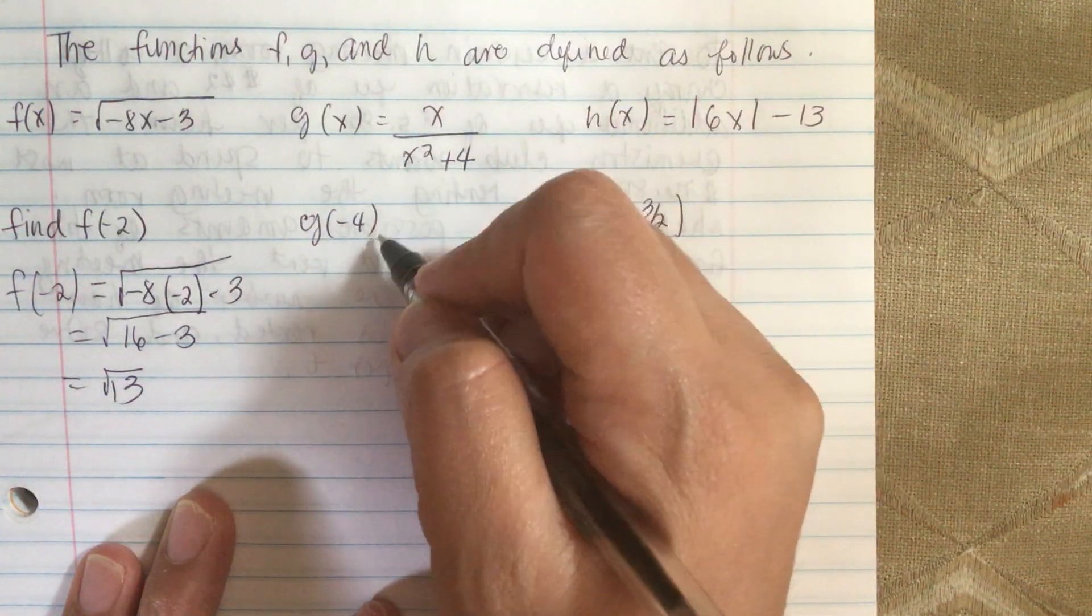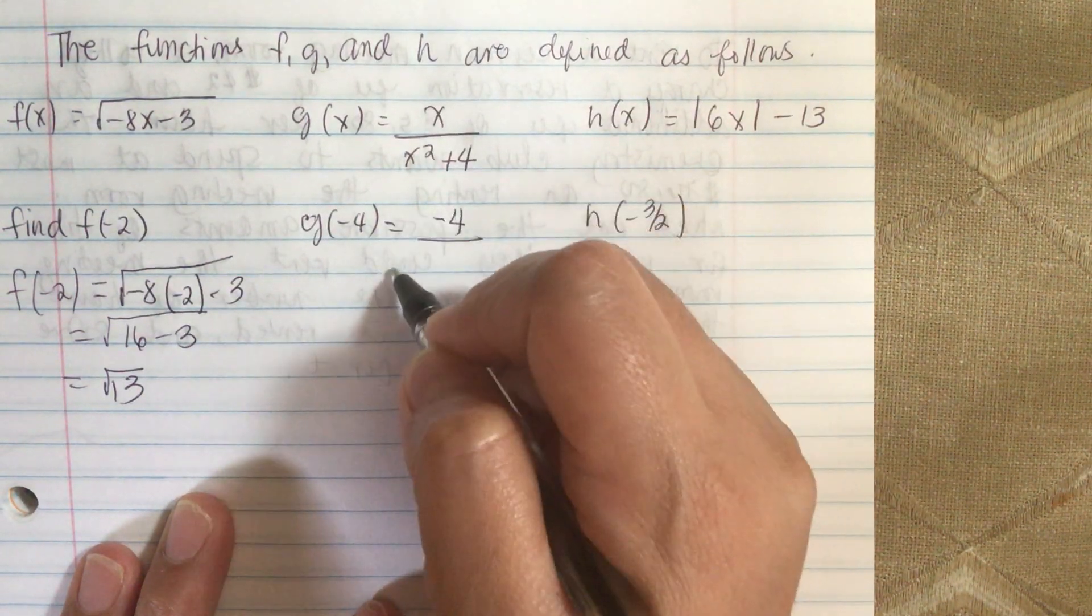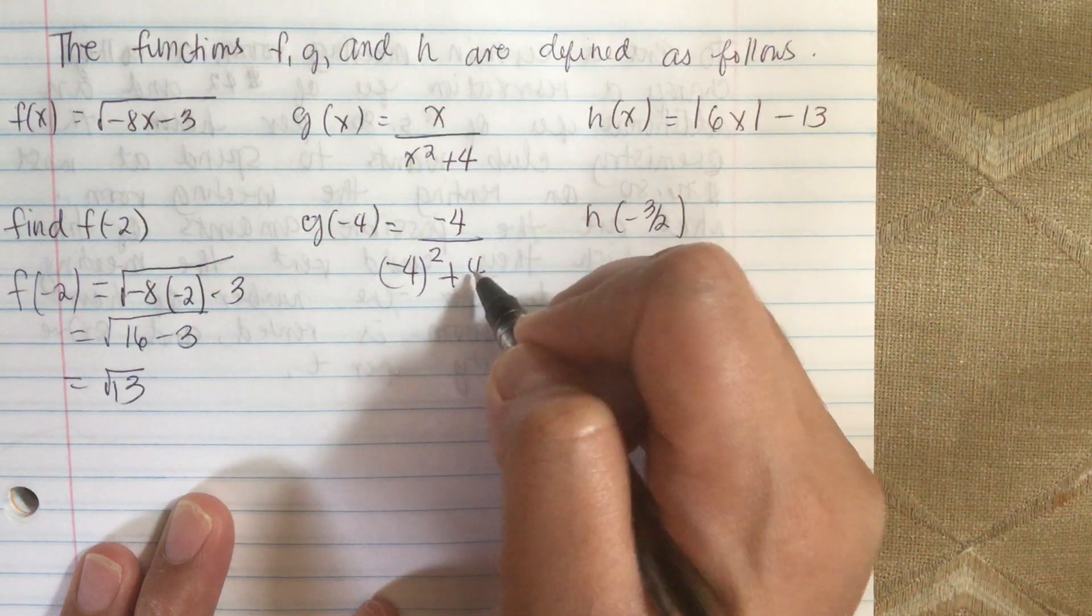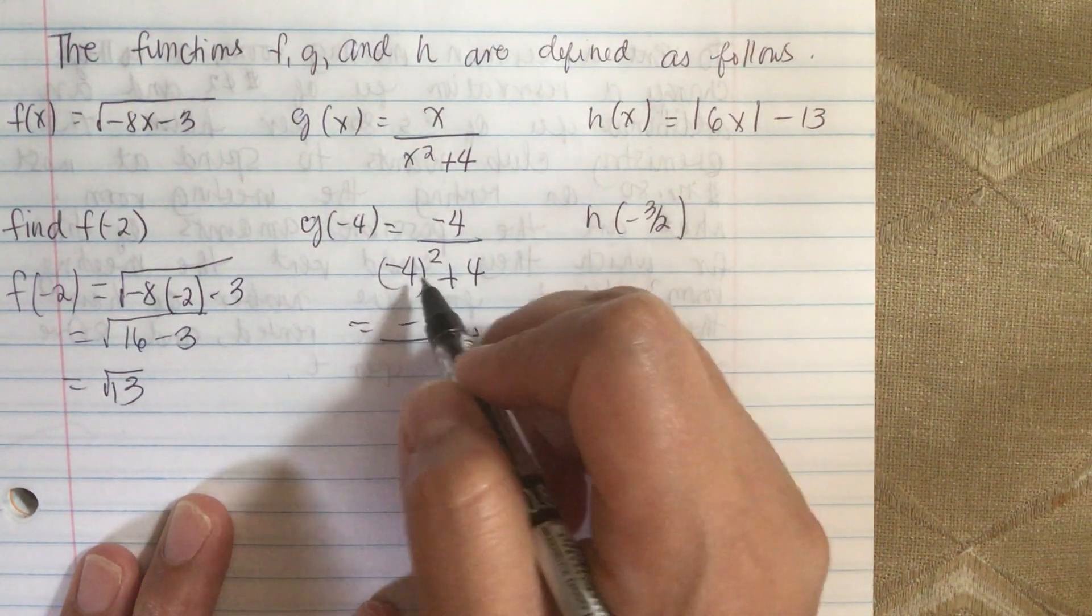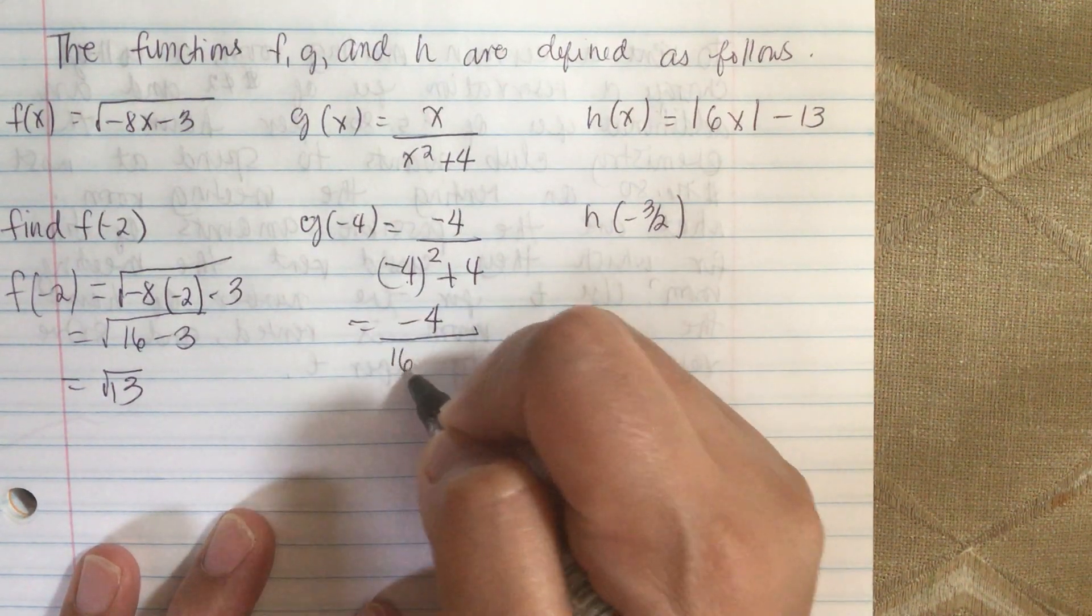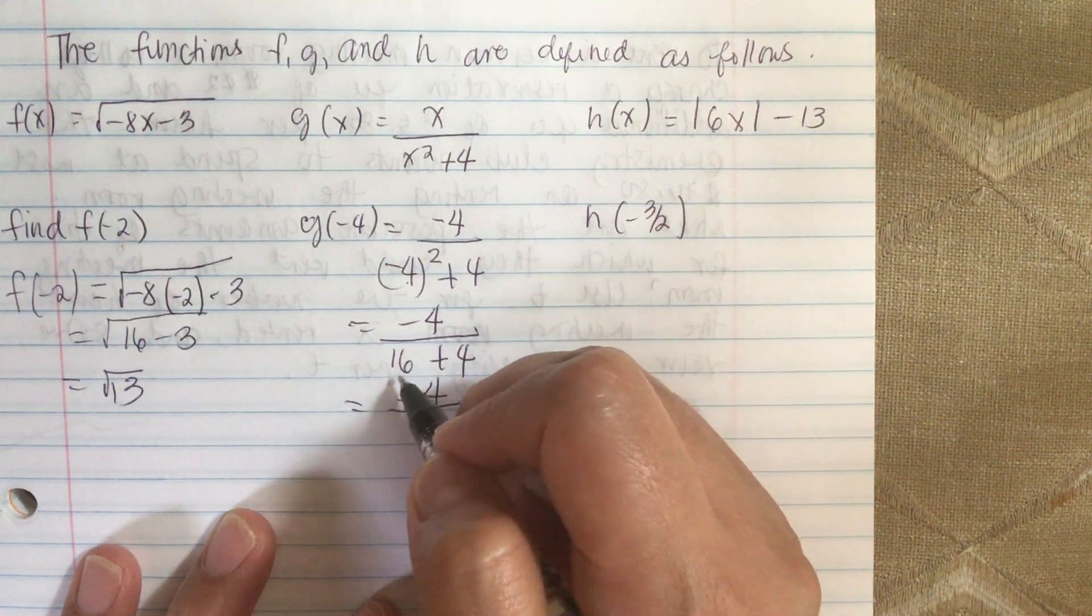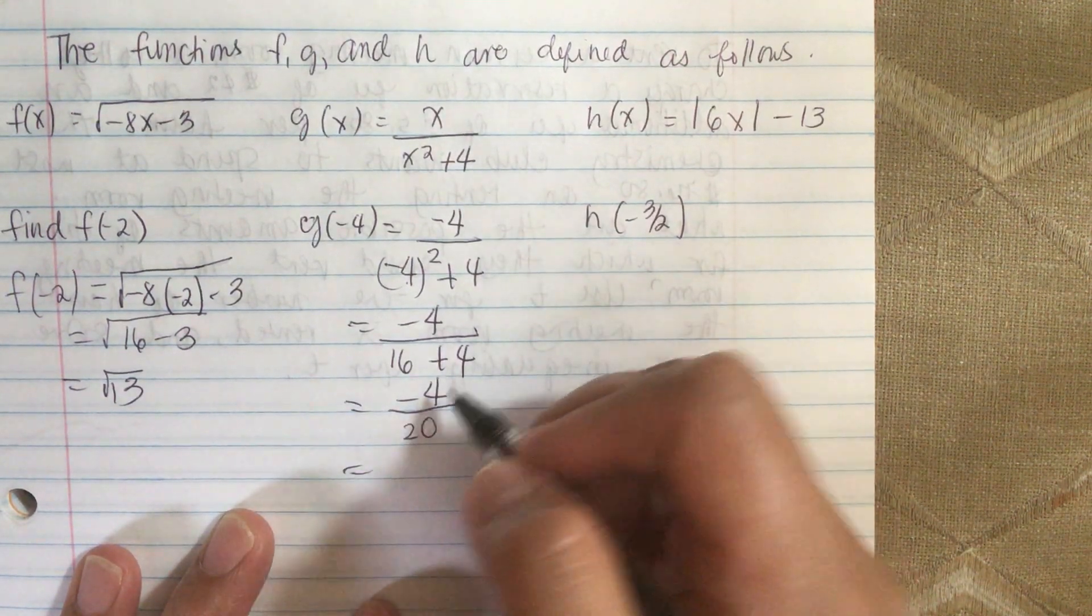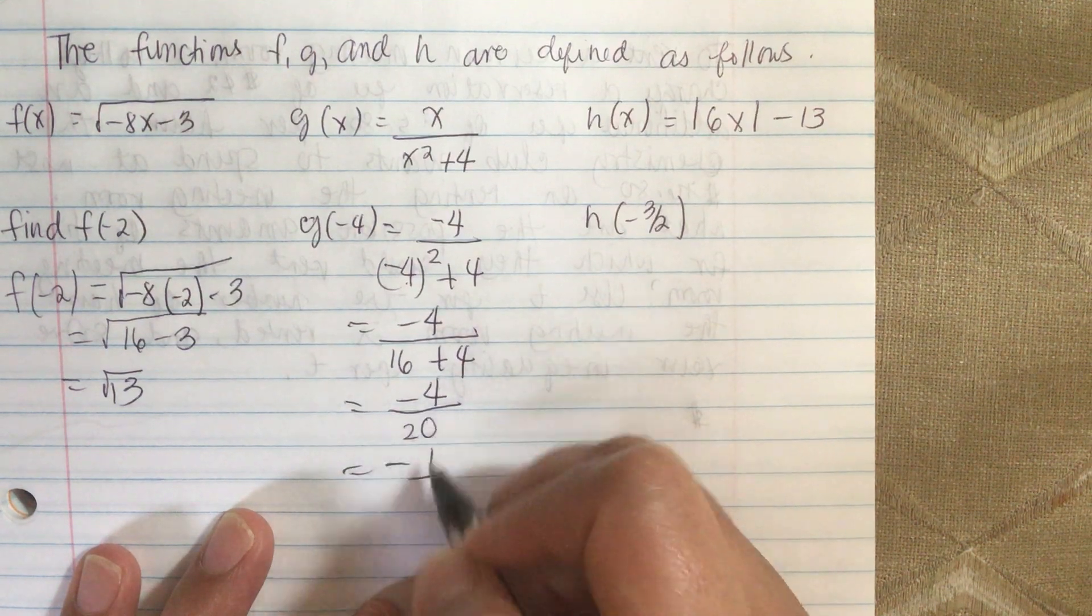So in here we have -4 over -4 squared plus 4. This is equal to -4 over, 4 times 4 is 16, plus 4. So we have -4 over 16 plus 4 equals 20. This reduces to -4 over 20, which is -1/5.